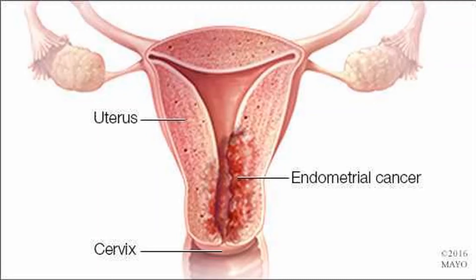Endometrioid cancer. Most endometrial cancers are adenocarcinomas, and endometrioid cancer is the most common type of adenocarcinoma, by far. Endometrioid cancers start in gland cells and look a lot like the normal uterine lining, the endometrium. Some of these cancers have squamous cells — squamous cells are flat, thin cells — as well as glandular cells. There are many variants or sub-types of endometrioid cancers, including adenocarcinoma with squamous differentiation, adenoacanthoma, adenosquamous or mixed cell, secretory carcinoma, ciliated carcinoma, and villoglandular adenocarcinoma.